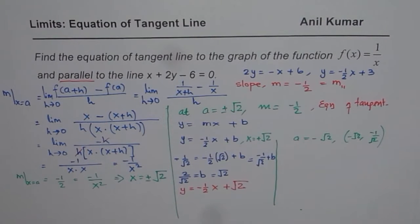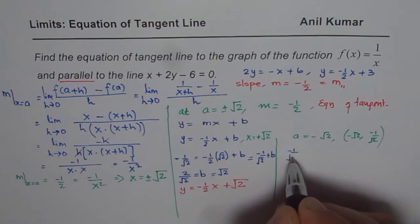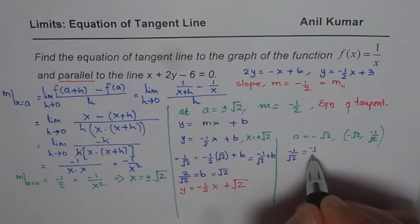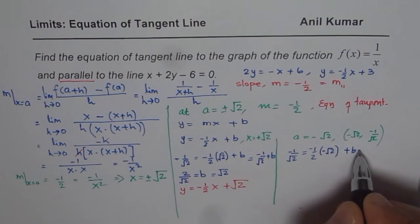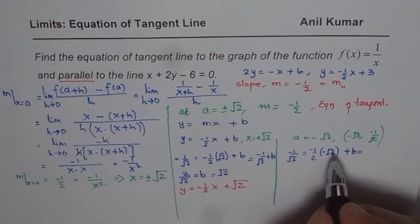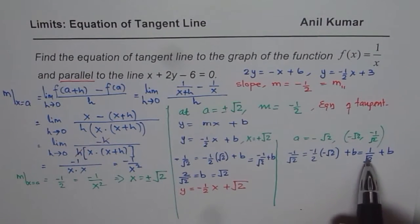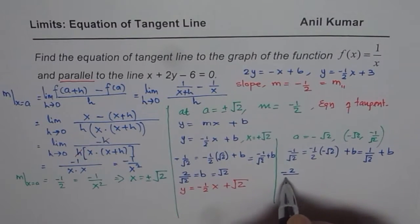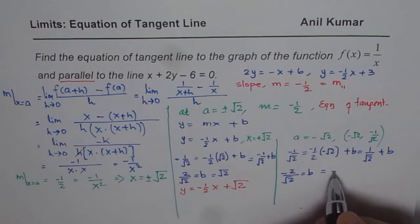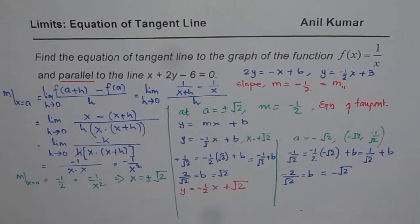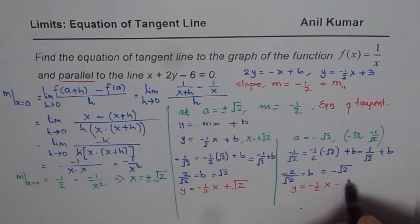For the second tangent line, at x = -√2, y = -1/√2. Substituting: -1/√2 = -½·(-√2) + b, giving -1/√2 = 1/√2 + b. So b = -2/√2 = -√2. Therefore, the second equation of the tangent line is y = -½x - √2.